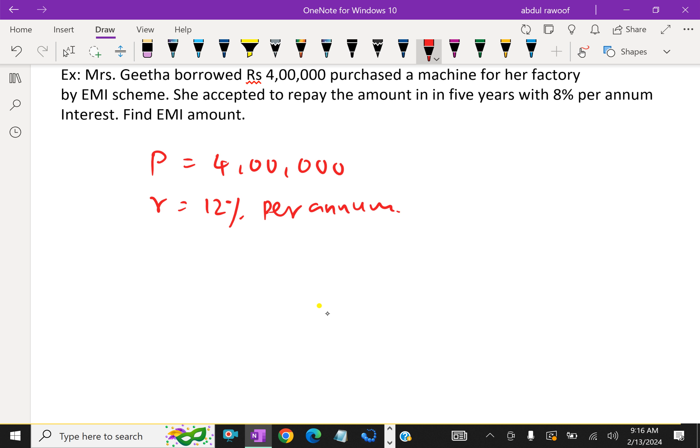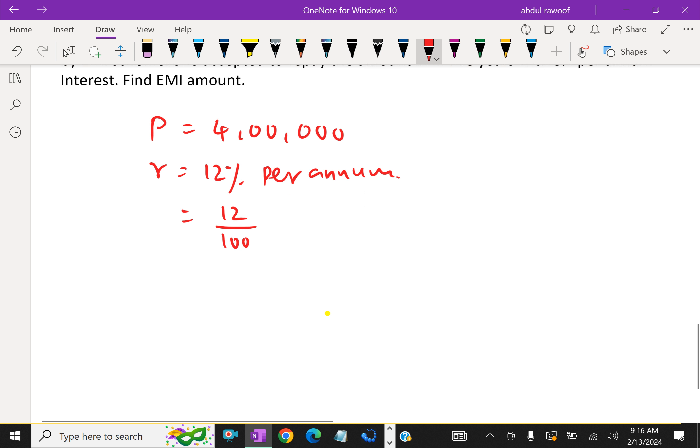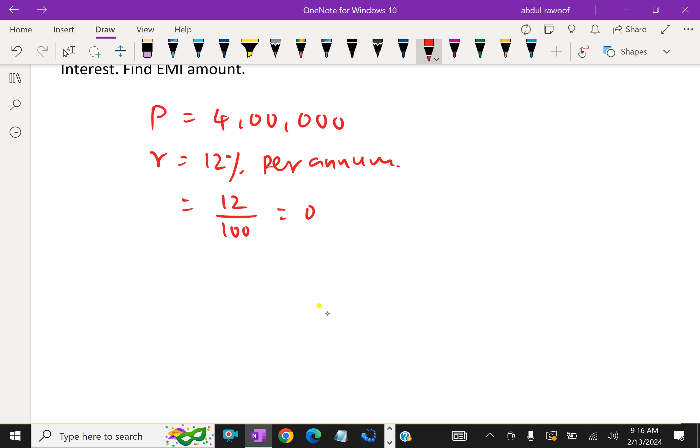Which is equal to 12 by 100 equals 0.12 per annum, which is further equal to 0.12 divided by 12, which is equal to 0.01 per month. This we need for the calculation R.